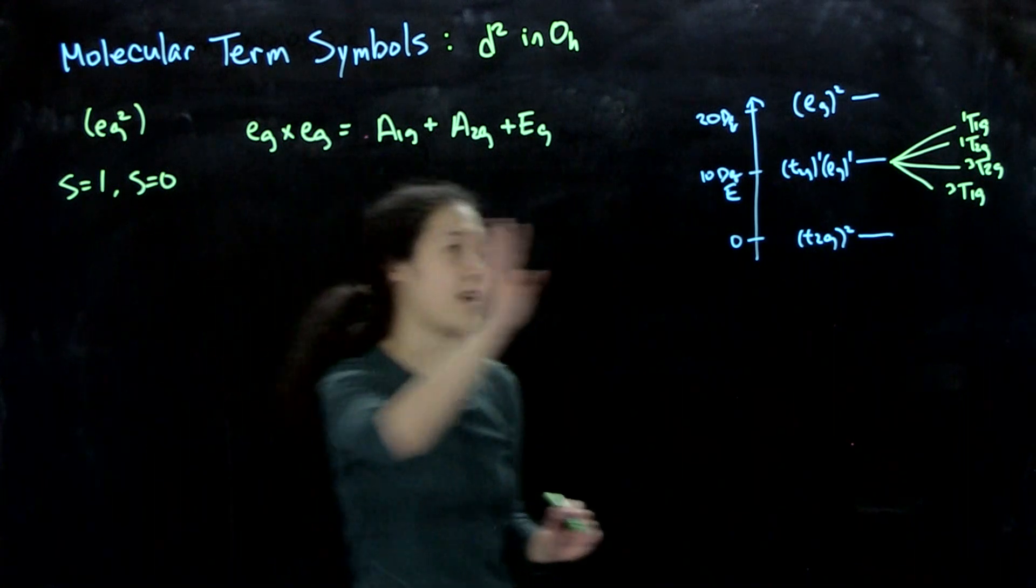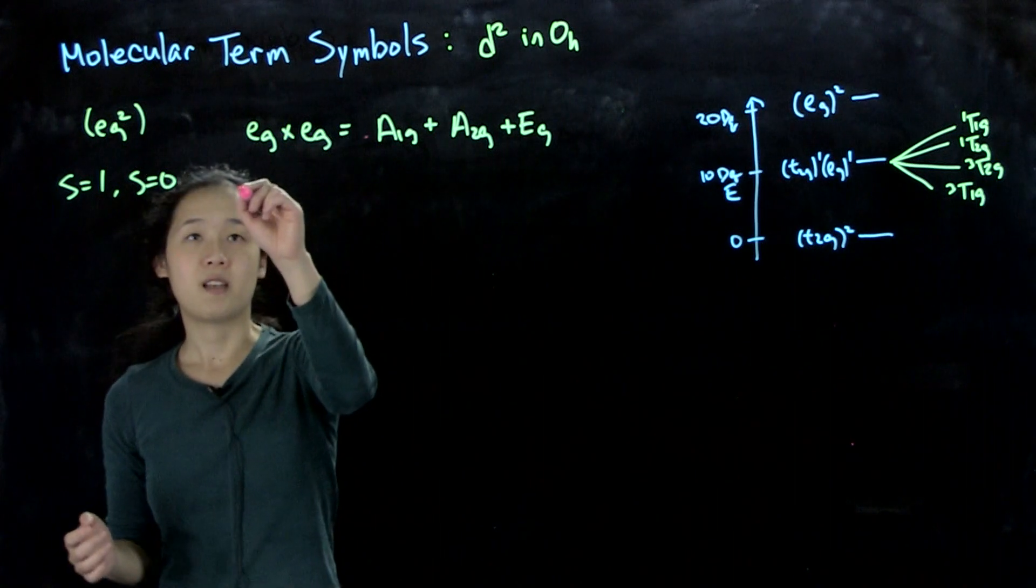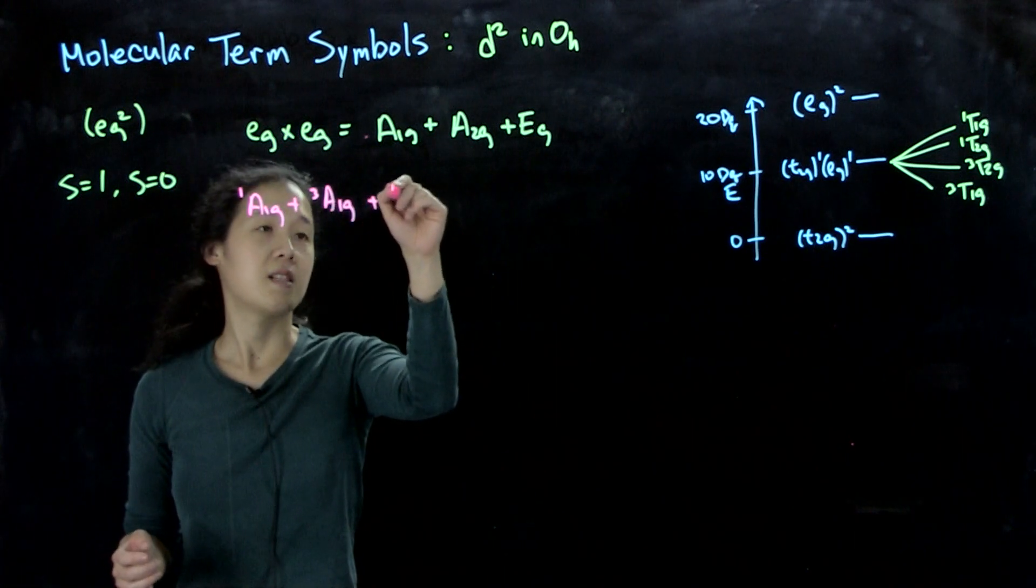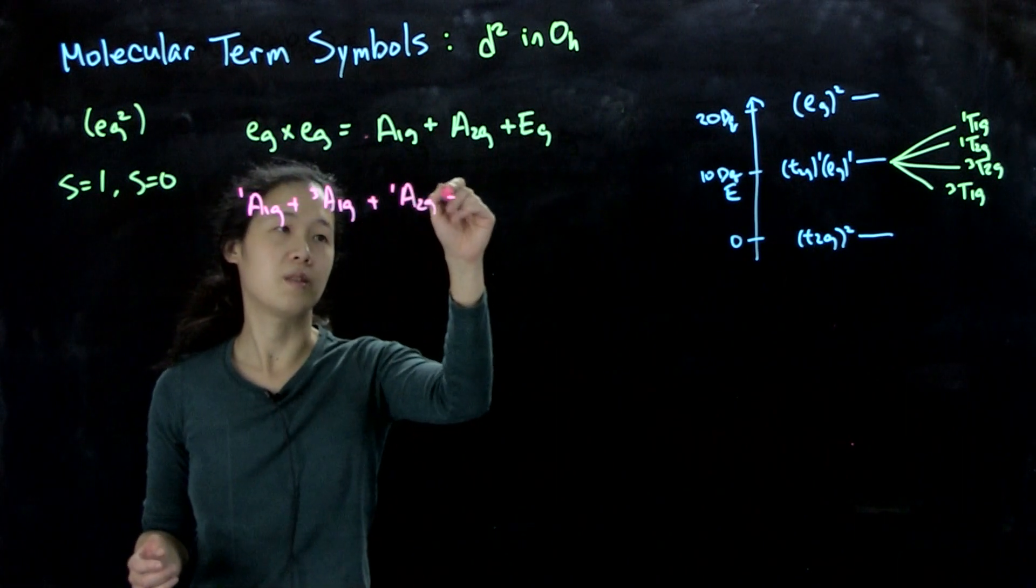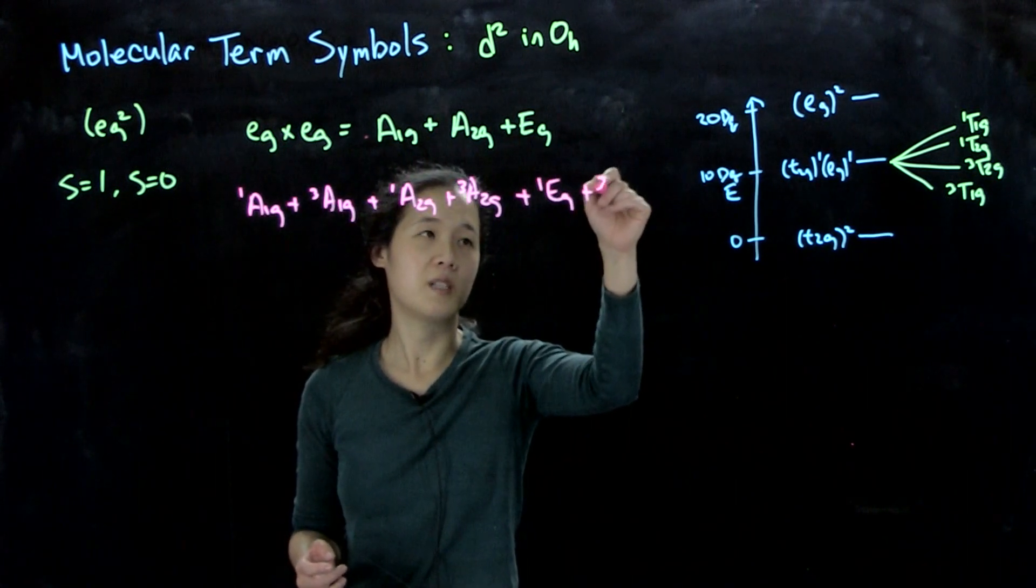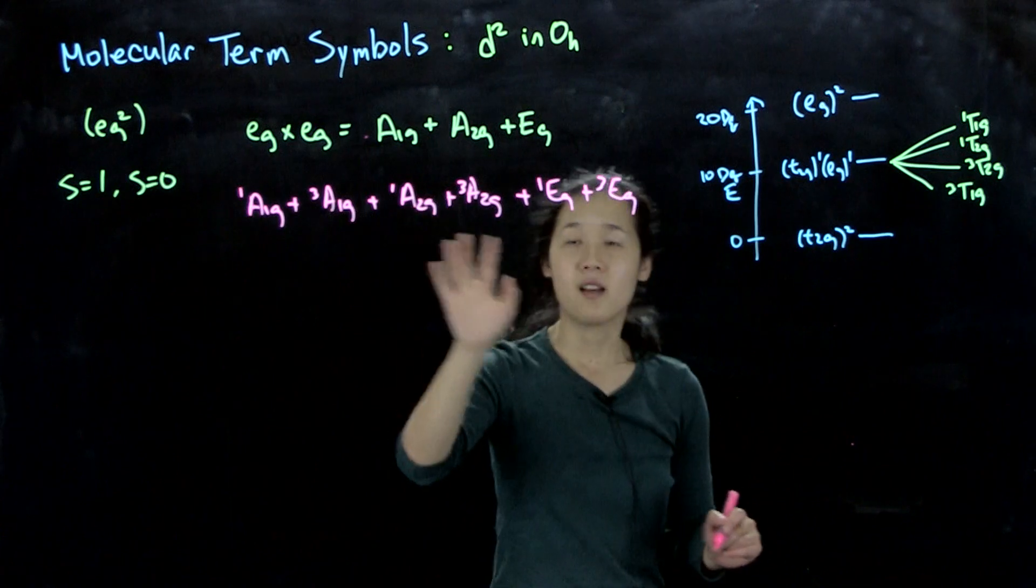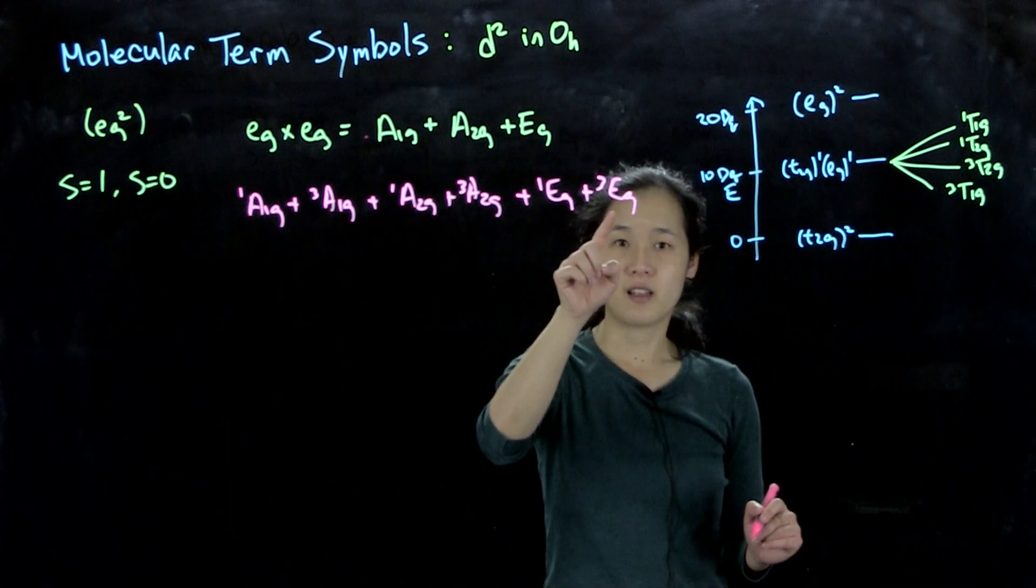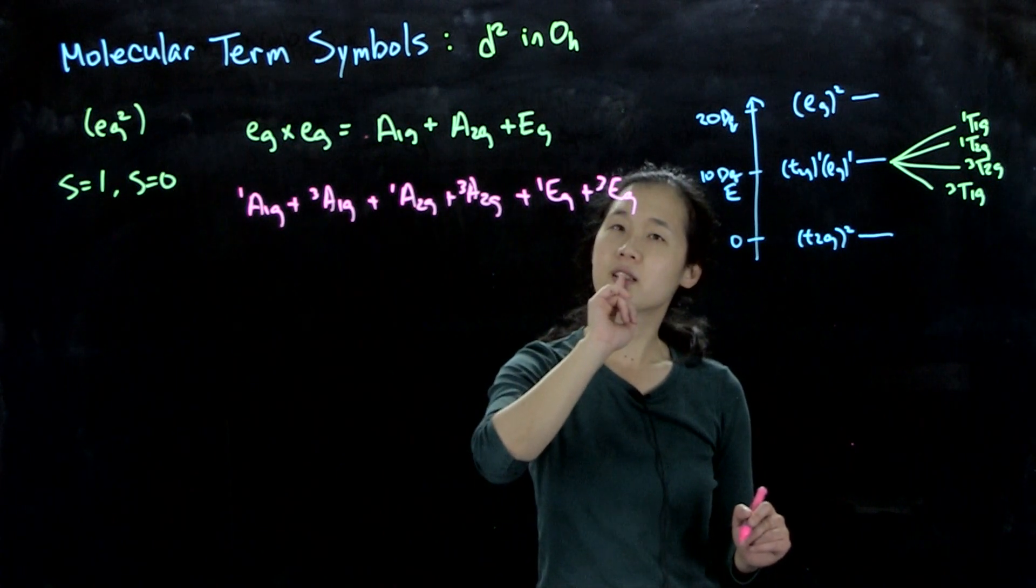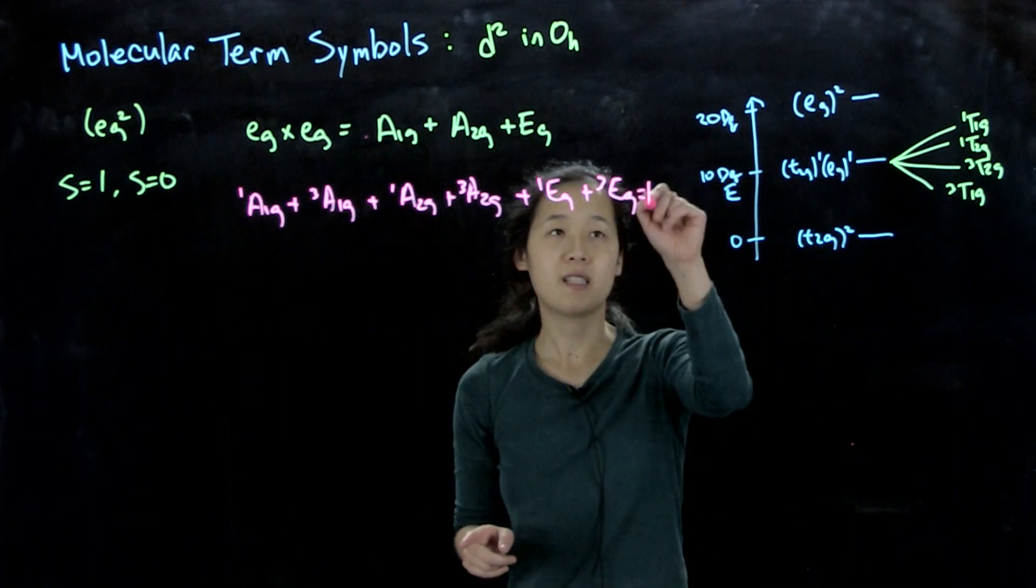OK, so the problem is if we did it this way, where we just add the spin terms, we could potentially get something like, oh, why can't my answer just be singlet a1g plus triplet a1g plus singlet a2g plus triplet a2g plus singlet eg plus triplet eg. And then so overall this would give us, let's see, 1 plus 3 plus 1 plus 3 is 8 plus 2 plus 6, wait, no, 2 plus 9, 11. No, I can't do math. 6 plus 2 is 8 plus 8, so there should be 16, 16 microstates.